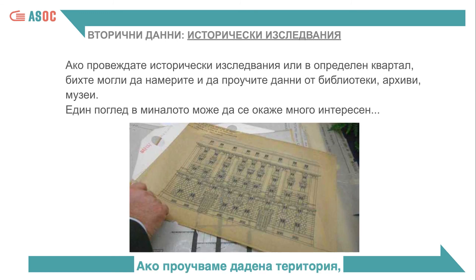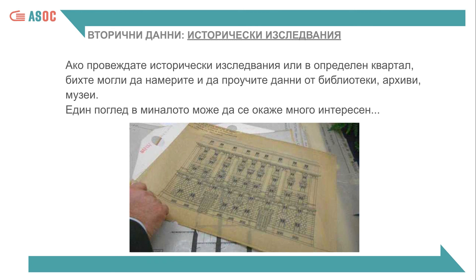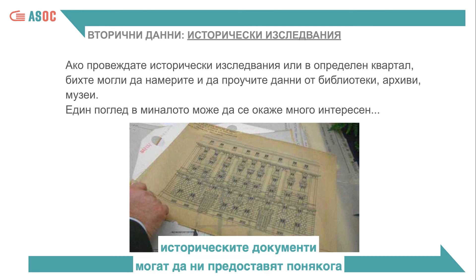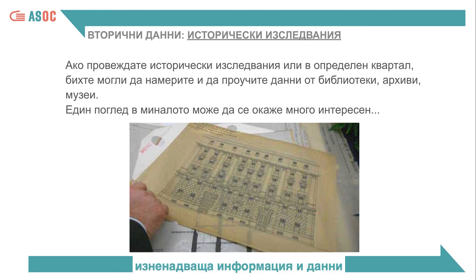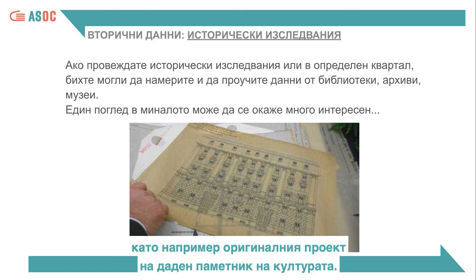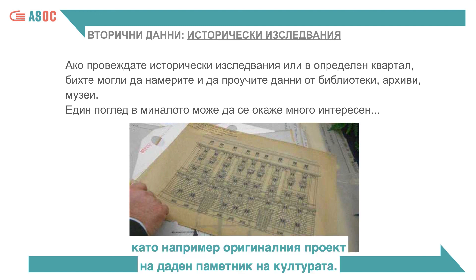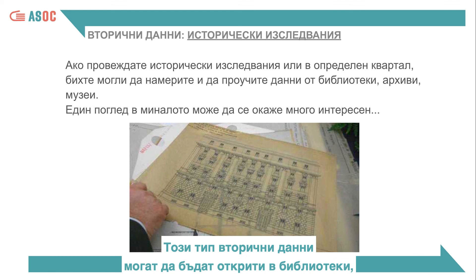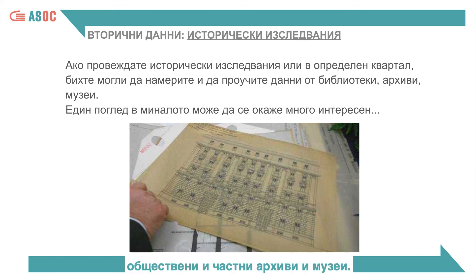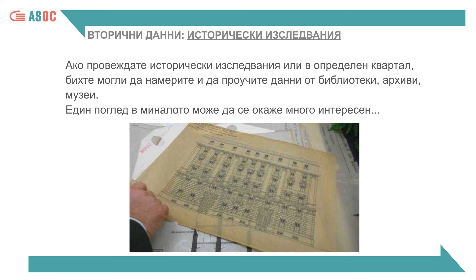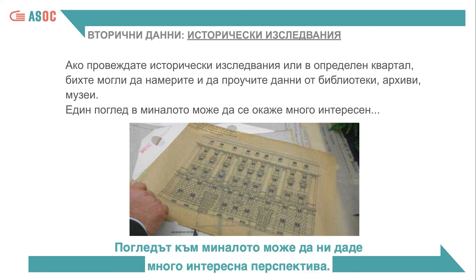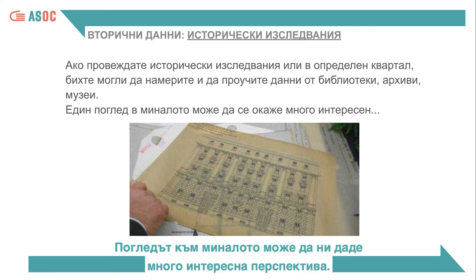If we are studying a territory, historical documents may sometimes provide us with surprising information and data, such as the original design of a cultural asset. This type of secondary data can be found in libraries, public and private archives and museums. Looking at the past can be very interesting.